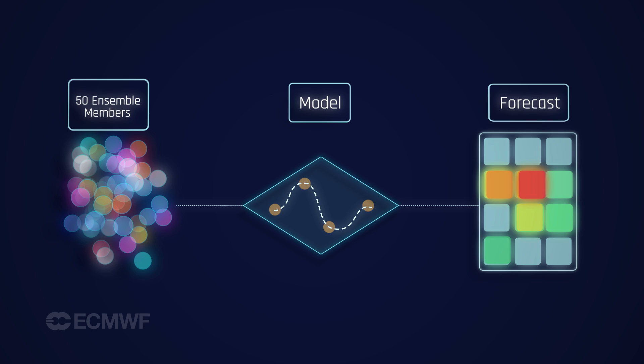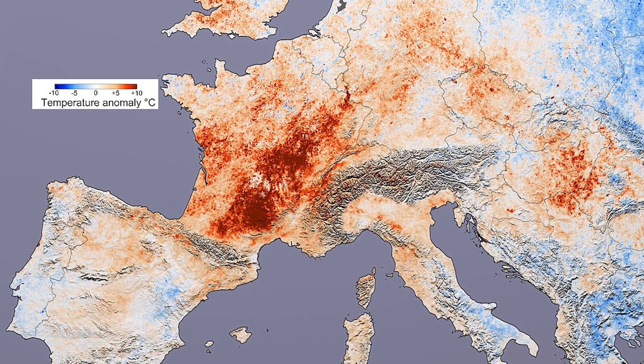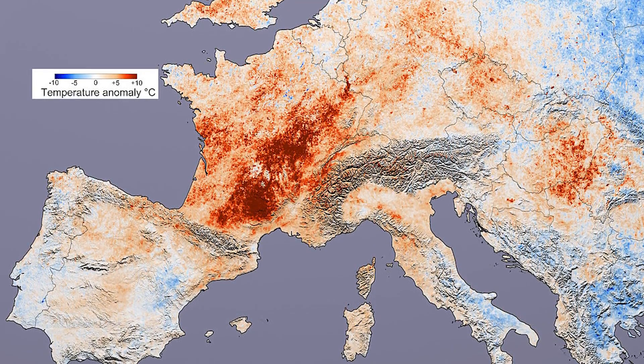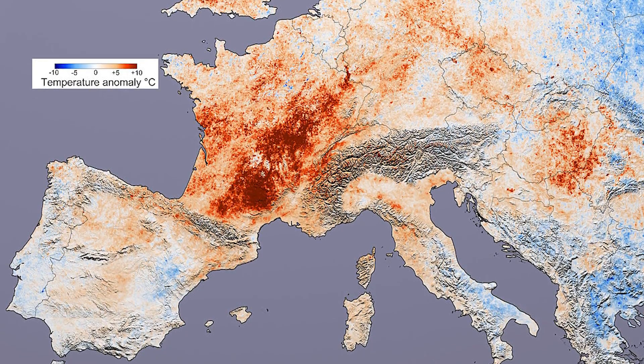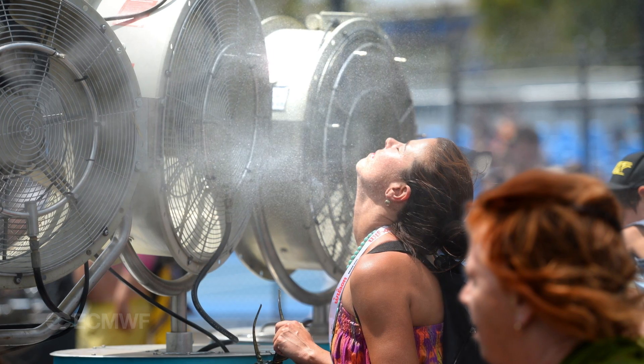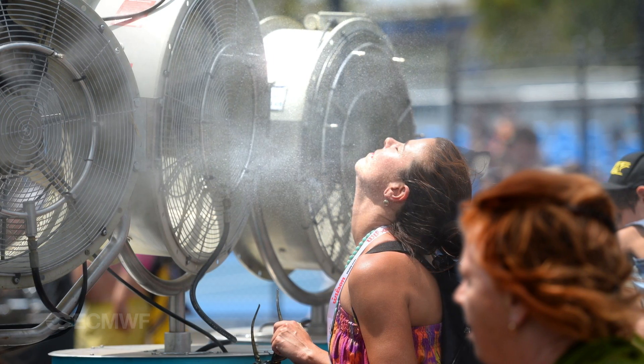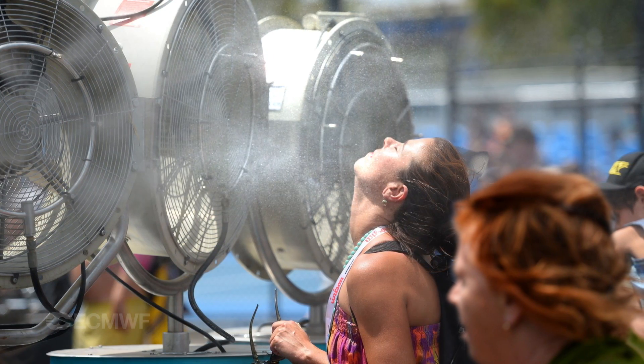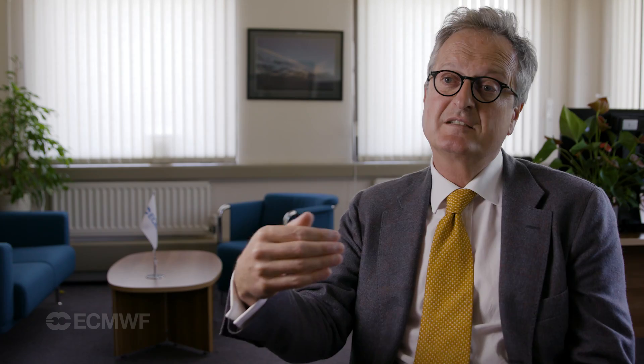This was extremely helpful in the summer of 2003, when Europe experienced extreme hot temperatures. With our ensemble system, we were able to predict these extremes two to three weeks ahead.